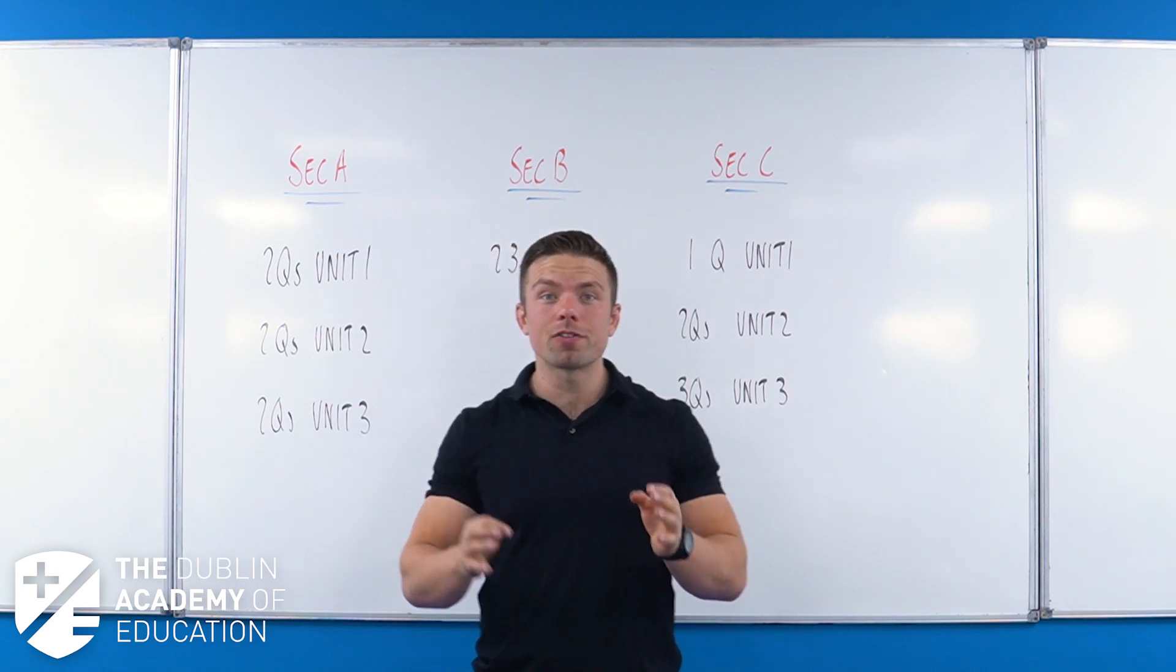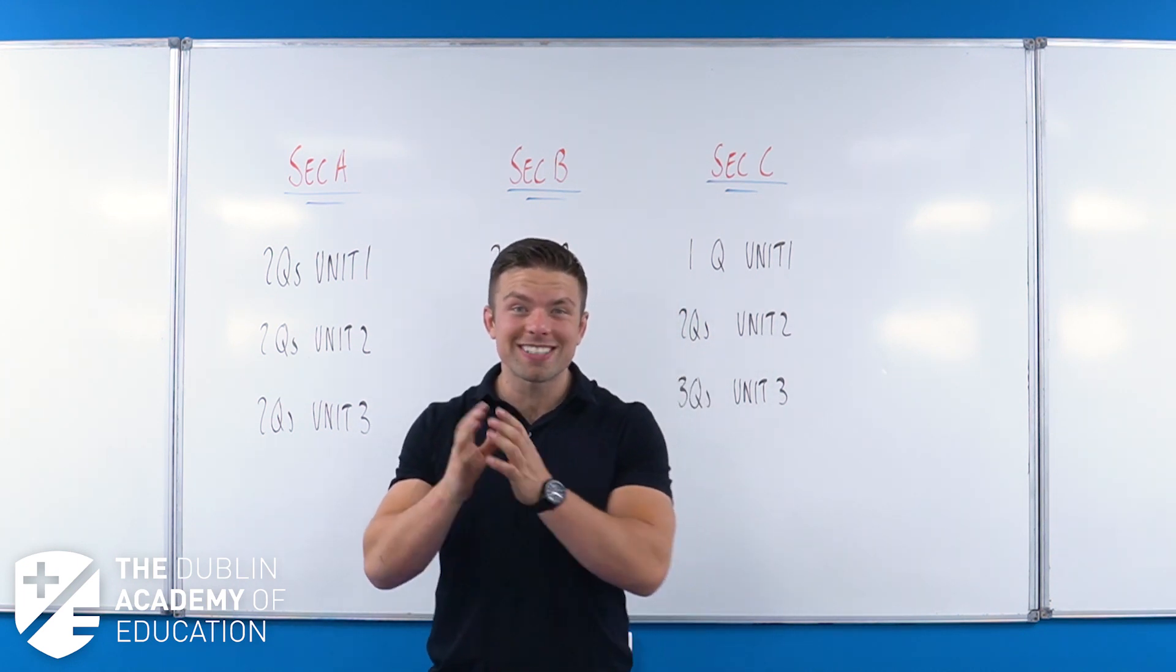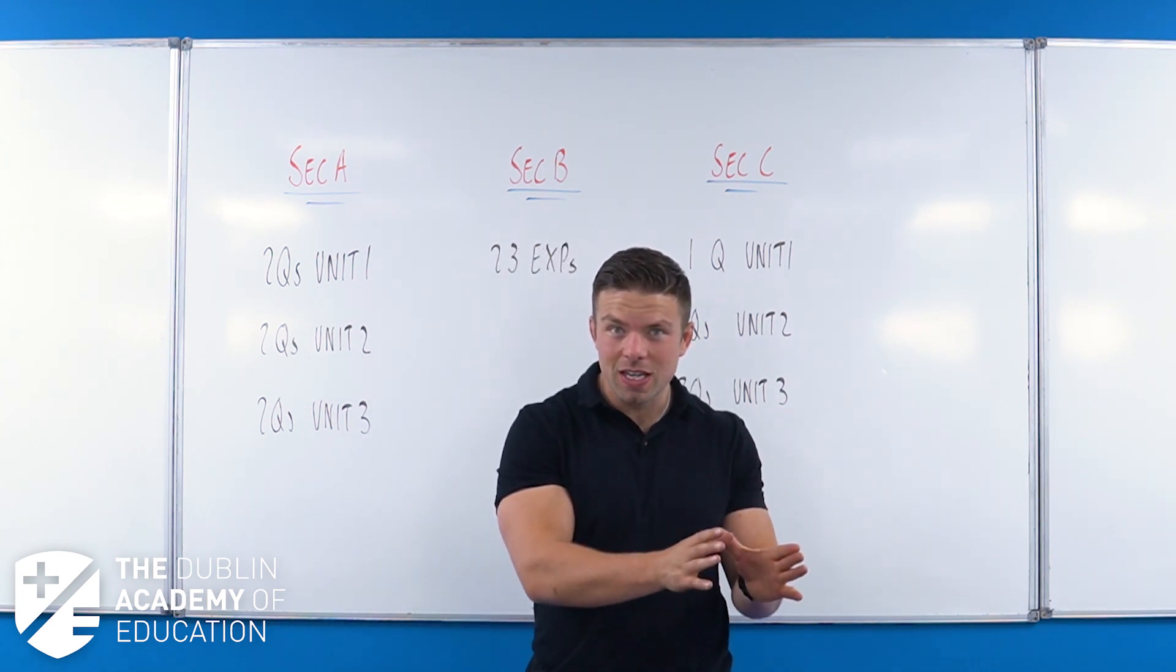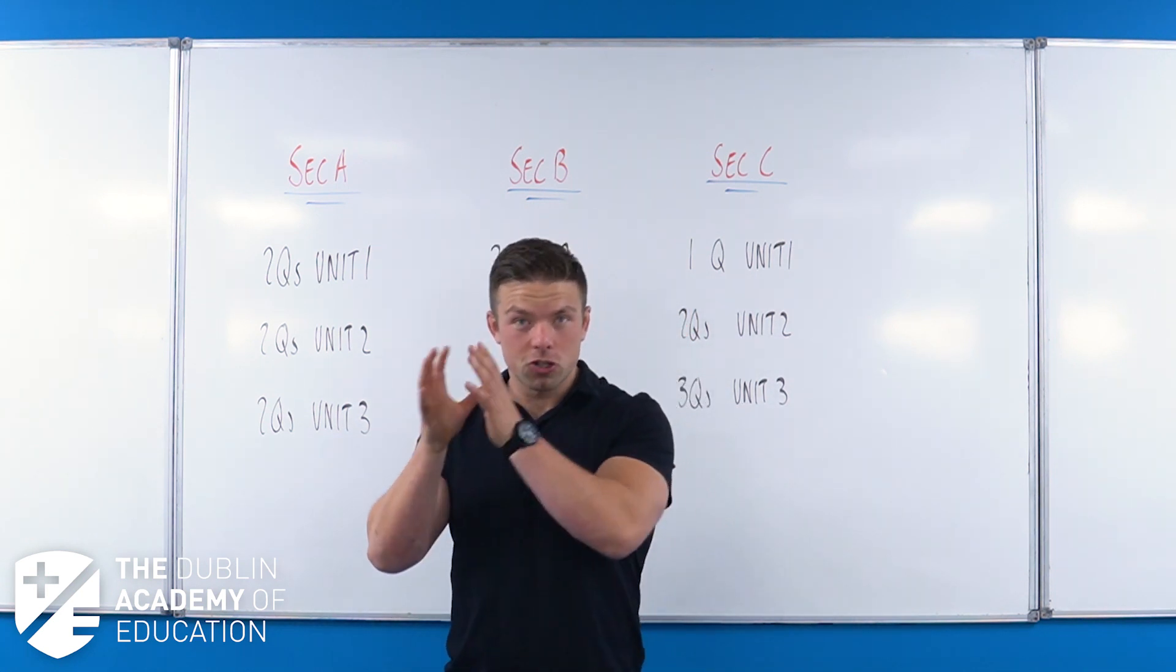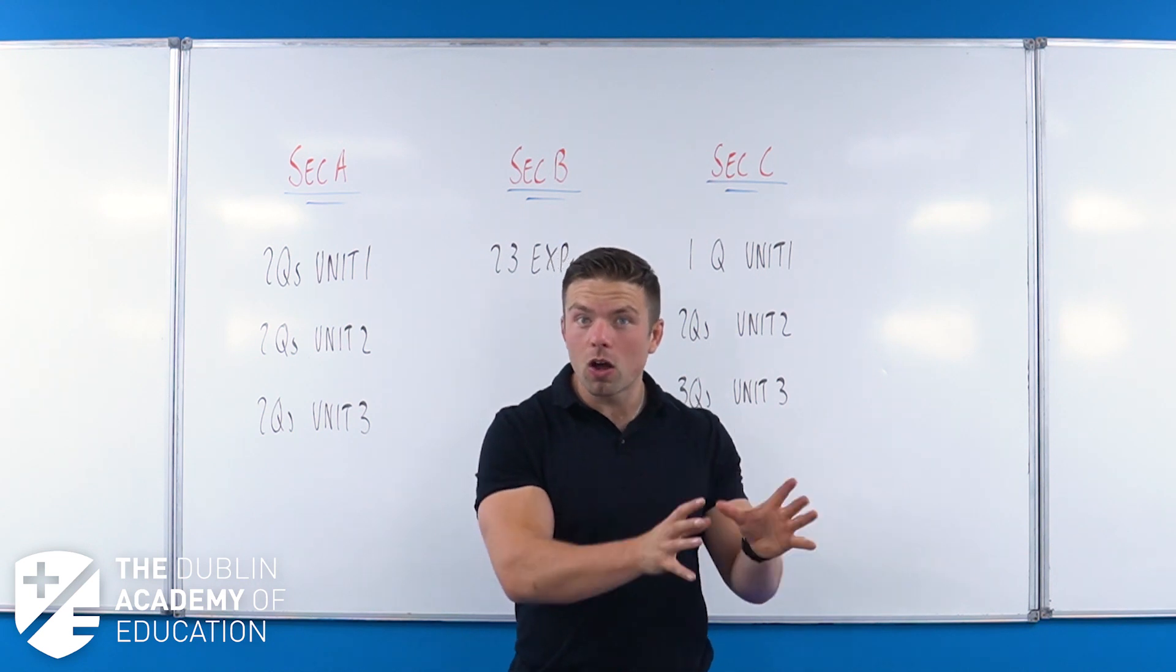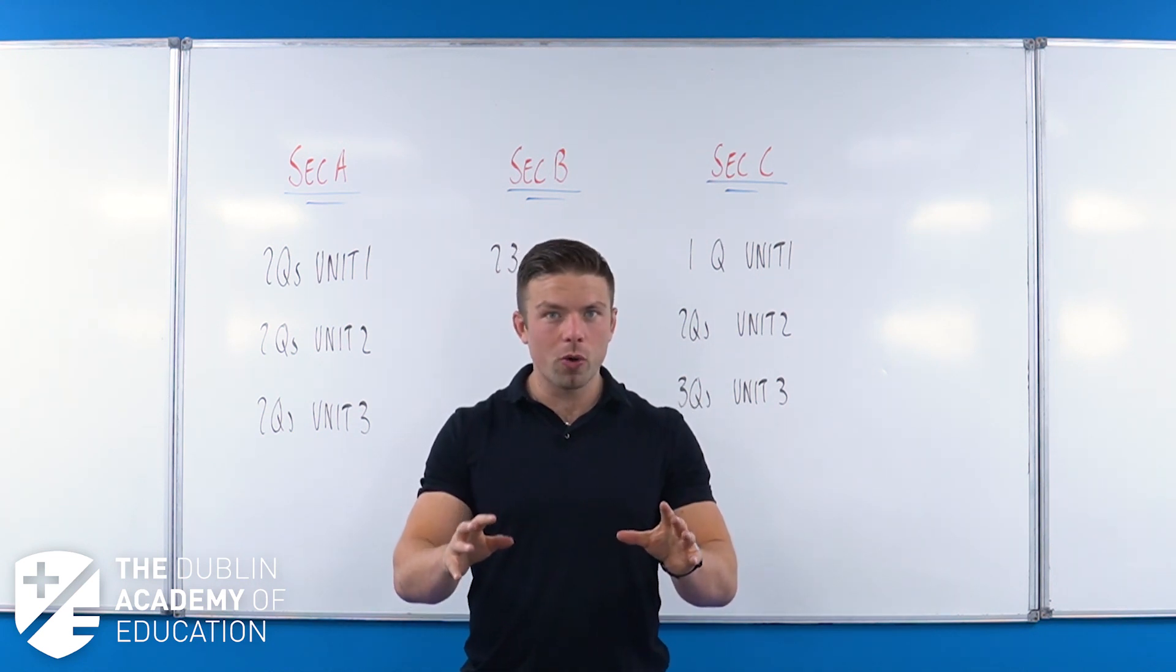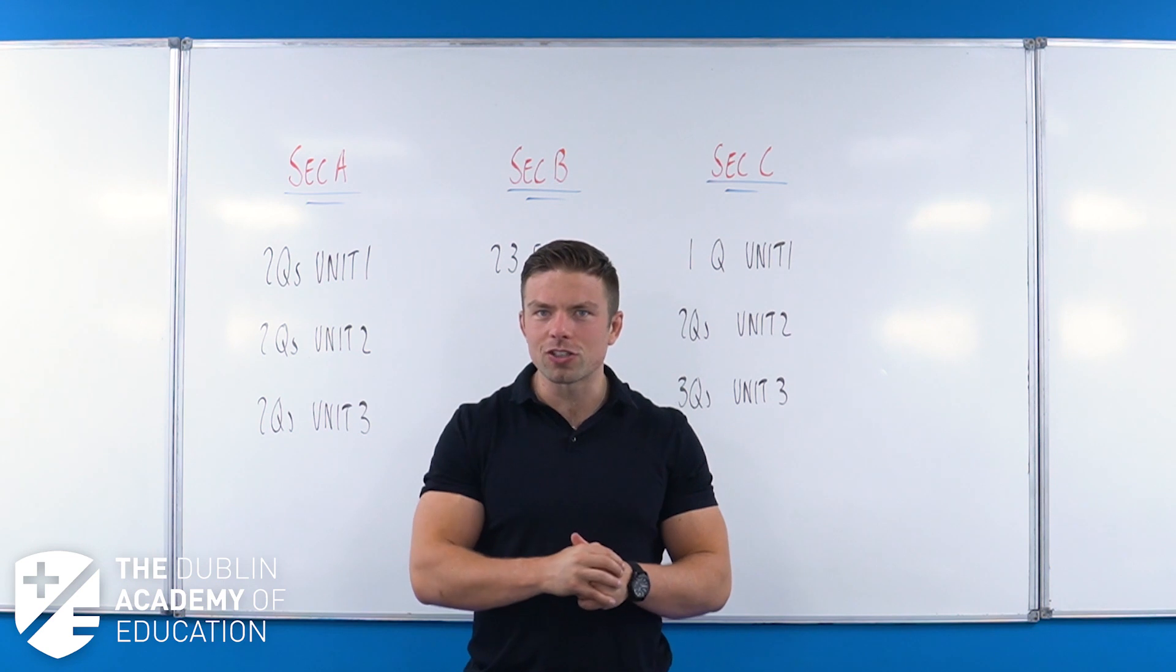Every single Leaving Cert for Biology is broken down the exact same way. We've got section A, section B and section C. A lot of people incorrectly call these sections the short questions, the experiments and the long questions. As any of my students would know, they are all short questions or more importantly, all short answers.